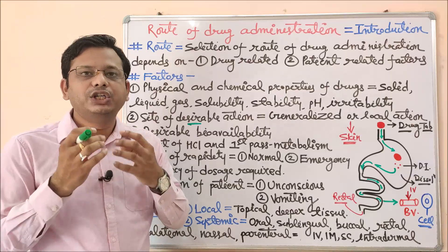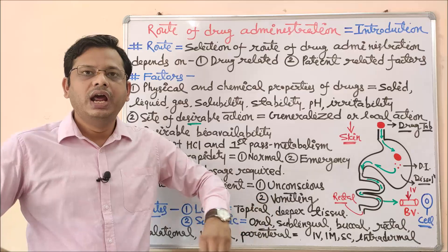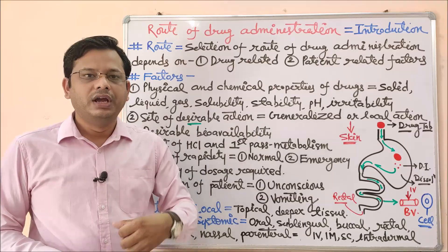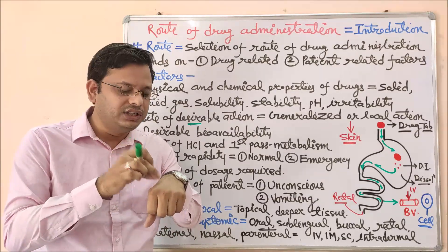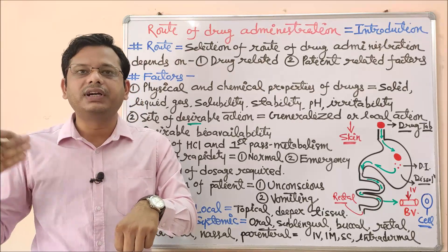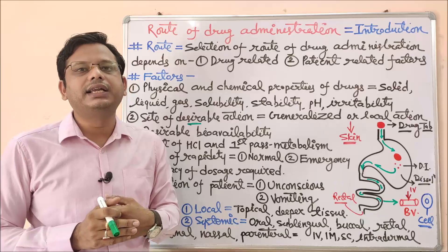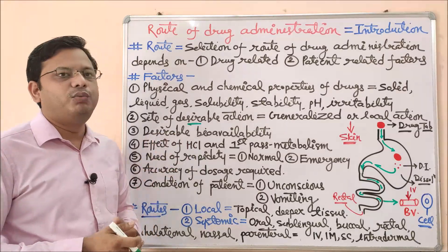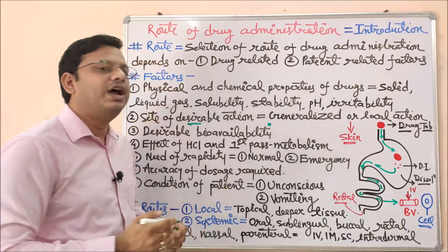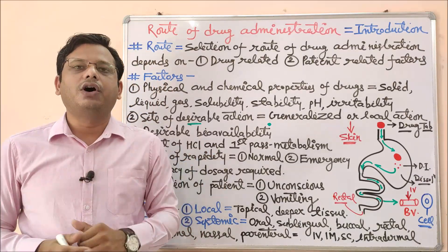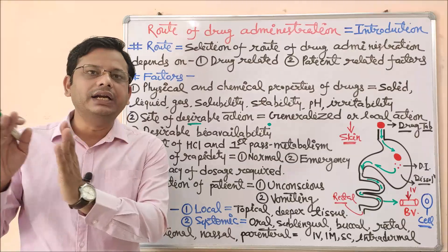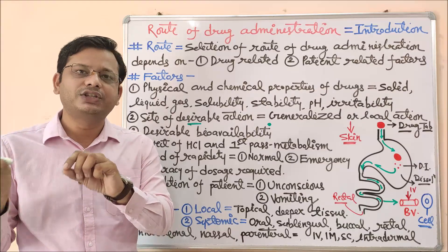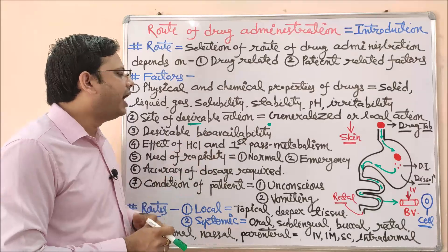This leads to the distinction between local and generalized effect. If I am vomiting, I take a tablet that goes through the stomach, reaches systemic circulation, and produces a generalized (overall body) effect. But if I have pain or infection in a specific part, there is no need for a systemic route — I simply apply a cream, balm, or lotion over the affected part for a local effect. The next selection criterion is desirable bioavailability: the rate and extent to which a drug is absorbed from its dosage form and reaches systemic circulation to produce its effect.